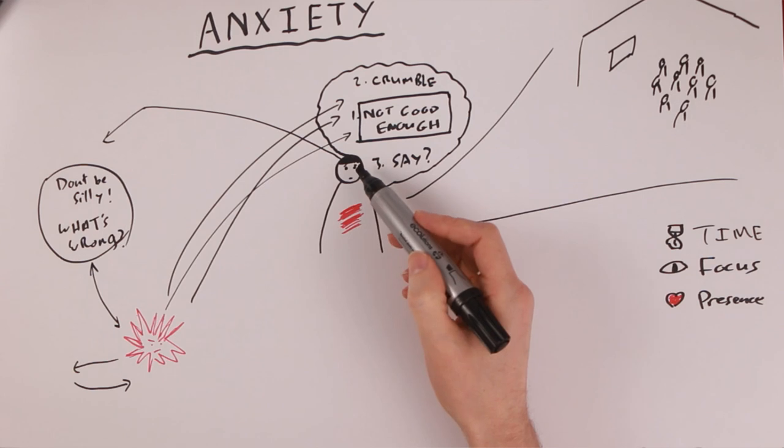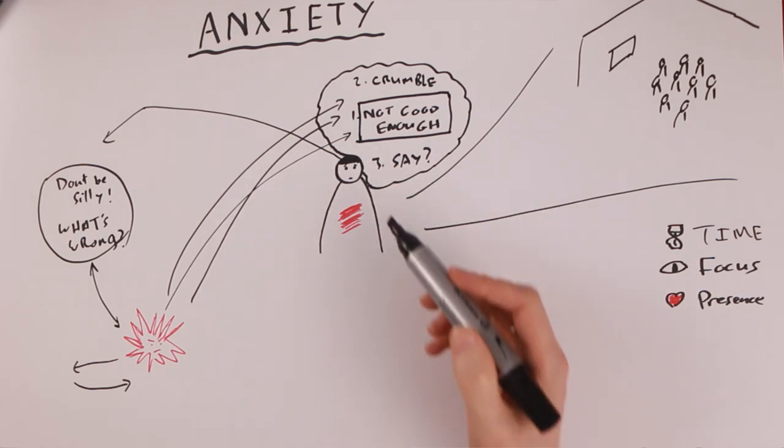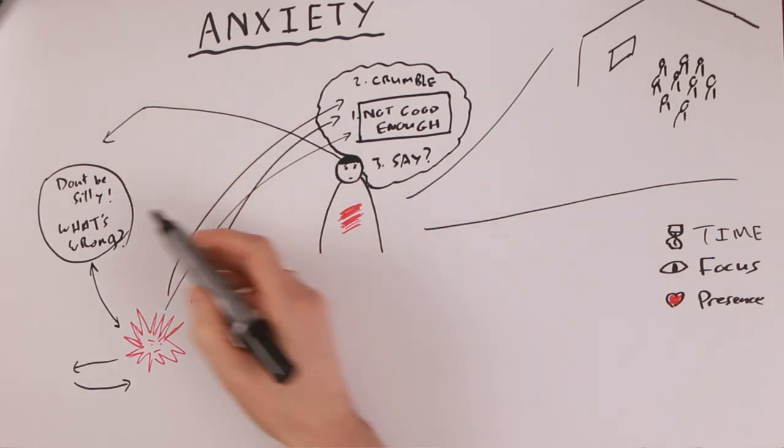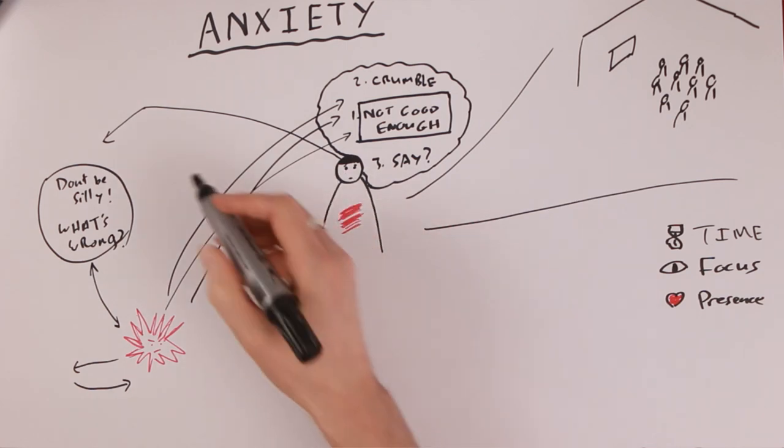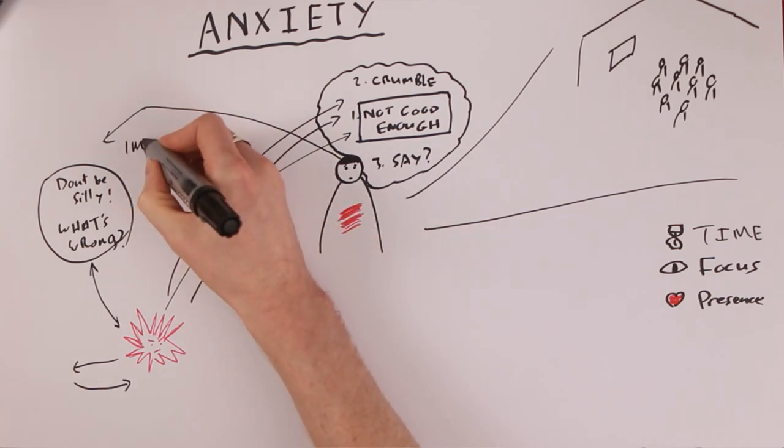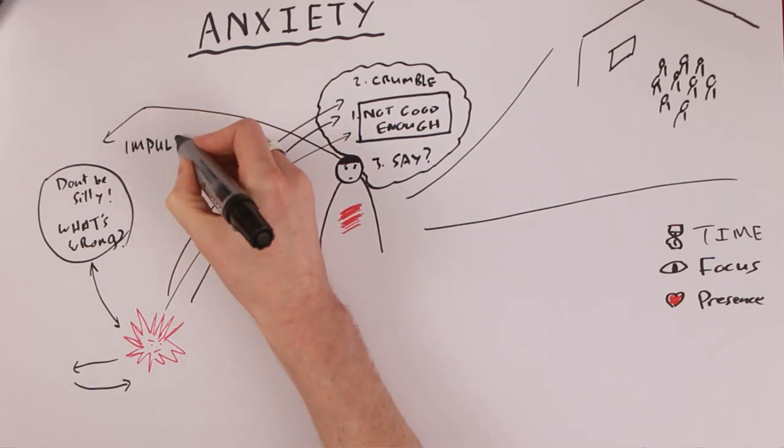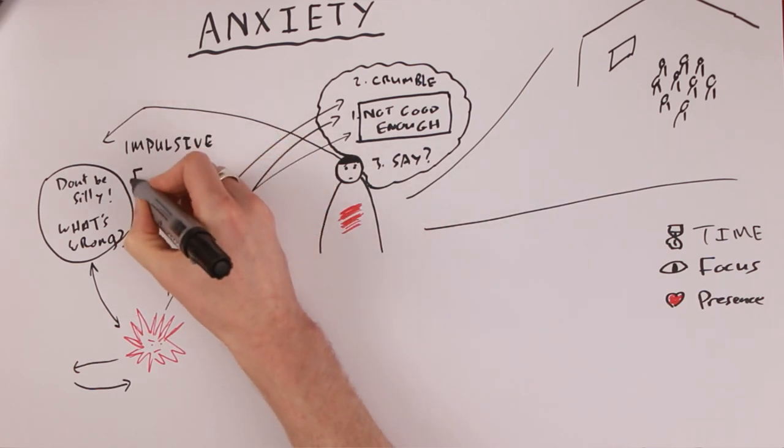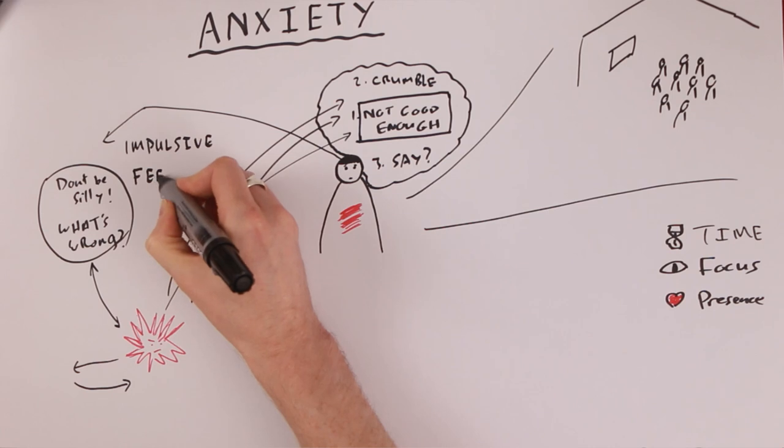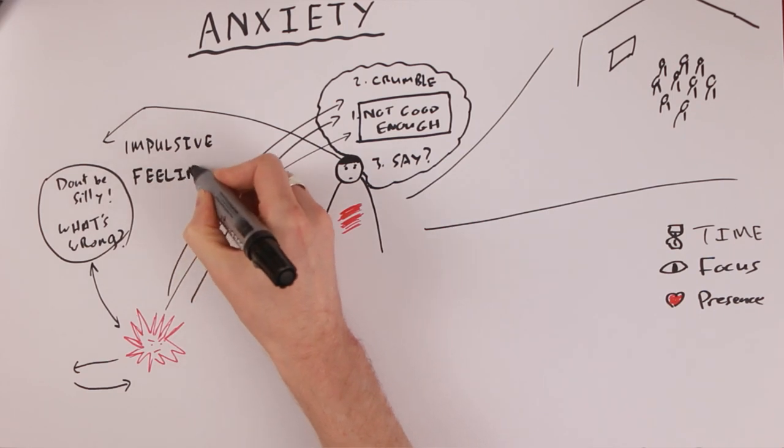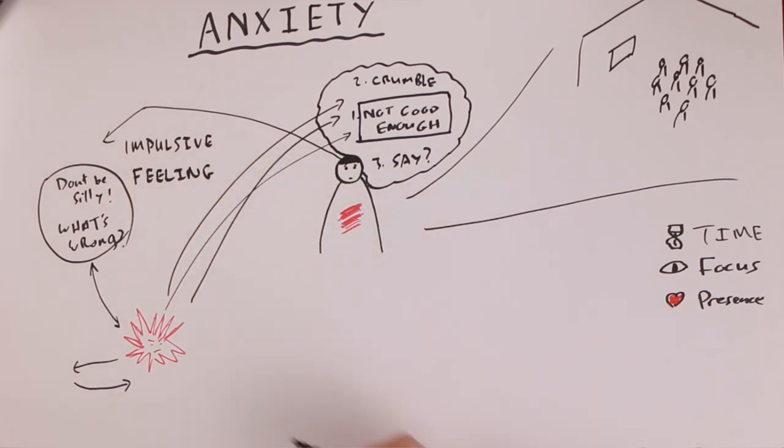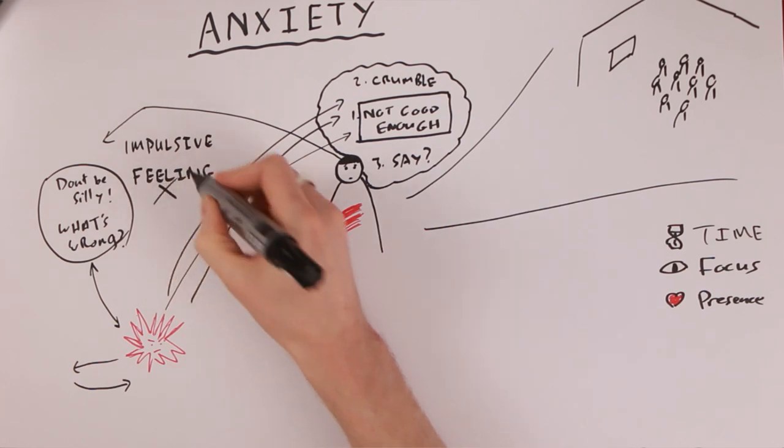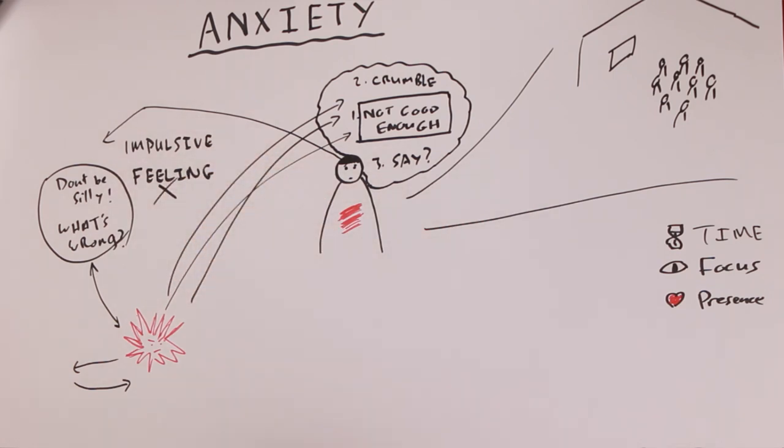Anxiety is also causing these intellectual answers to the problem. We cannot solve the problem of anxiety intellectually. Because you will notice about these thoughts that come in from the intellect, they're very impulsive. And another thing about them is, there's no feeling. There's no feeling in these corrections. There's no feeling.